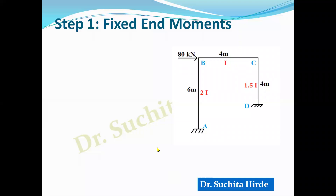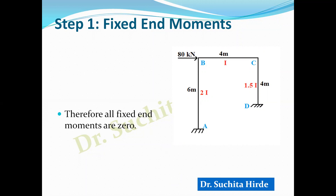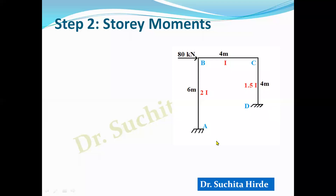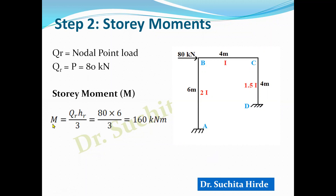The first step is to calculate fixed end moments. Since the load is acting at the nodal point, fixed end moments are not developed, so all fixed end moments are zero. Since there is a horizontal load on the column, we calculate the story moment: QR = 80 kN, HR = 6 m, giving story moment = QR × HR / 3 = 80 × 6 / 3 = 160 kN·m.